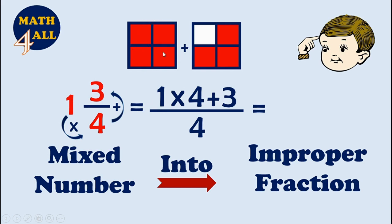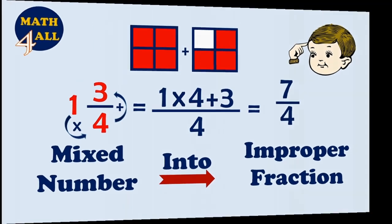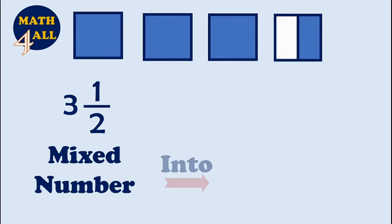We multiply the whole number by the denominator to get the number of broken parts in one shape, then add the number of parts in the fraction — the numerator. Four parts in one whole and three parts in this fraction. So in the numerator: one times four equals four, plus three equals seven. The answer is seven-fourths, and this is the improper fraction.